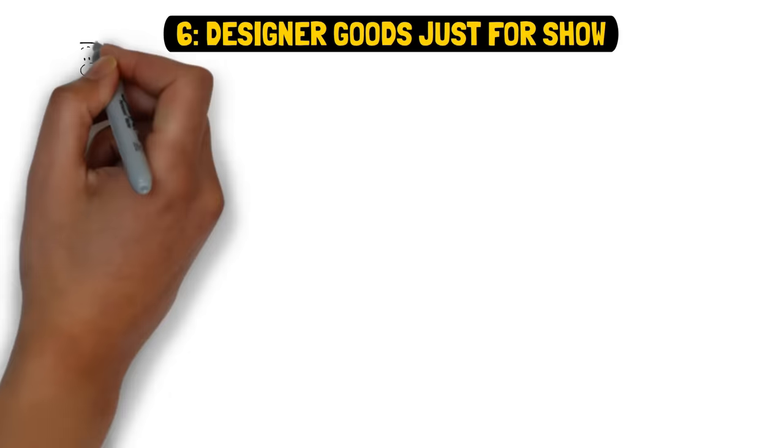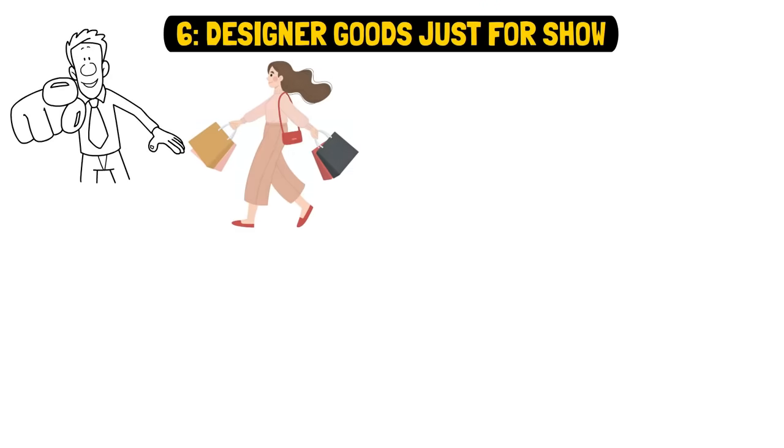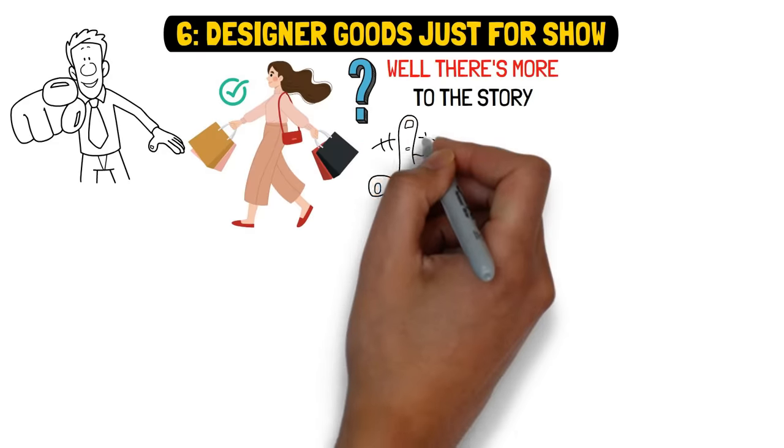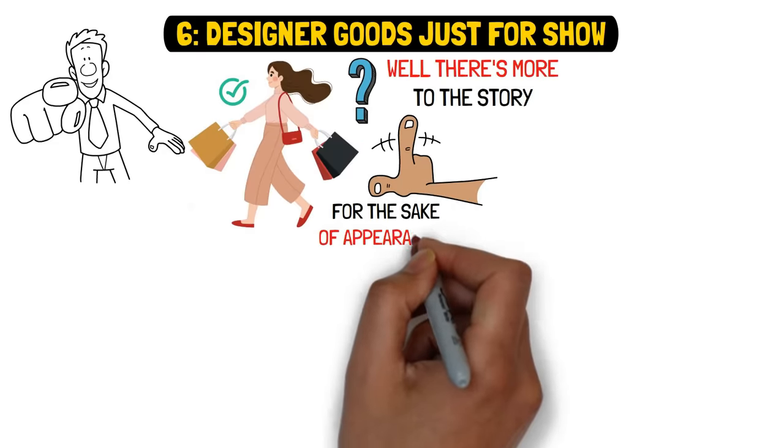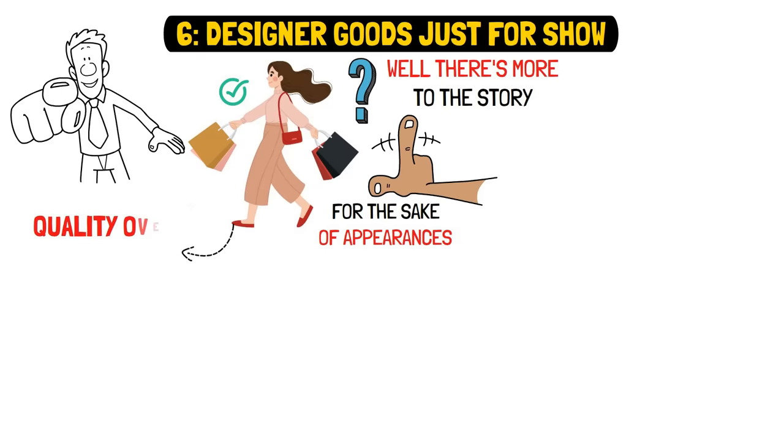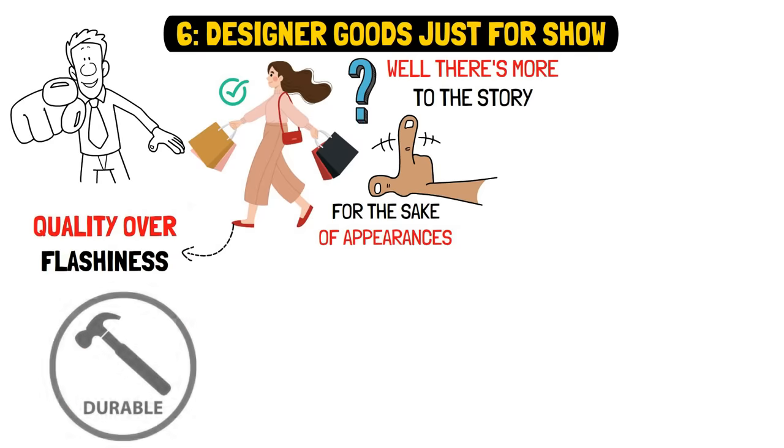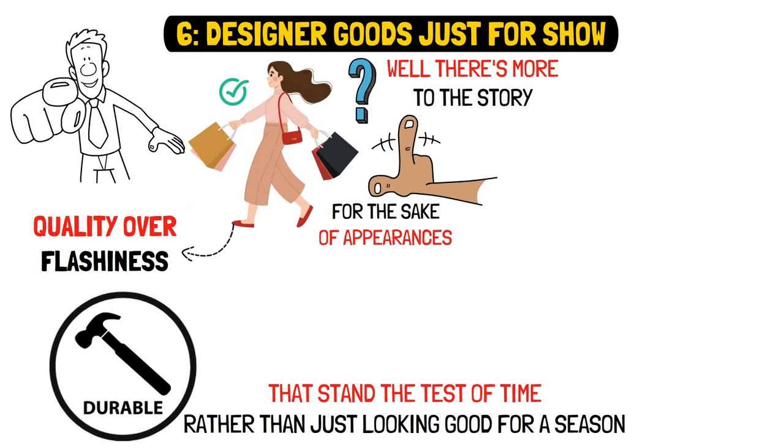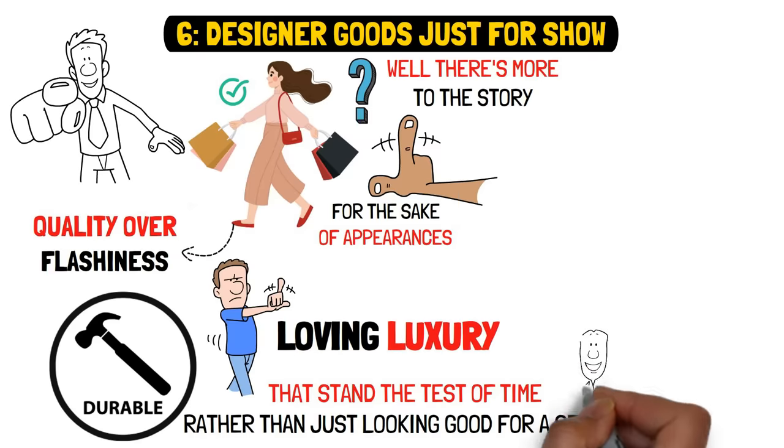Six, designer goods just for show. You might assume that the ultra-wealthy splurge on fancy items purely for show, right? Well, there's more to the story. These folks aren't just throwing money around for the sake of appearances. They're actually all about quality over flashiness. They go for well-made, durable, and valuable goods that stand the test of time rather than just looking good for a season. And it's not just about loving luxury, it's smart shopping.